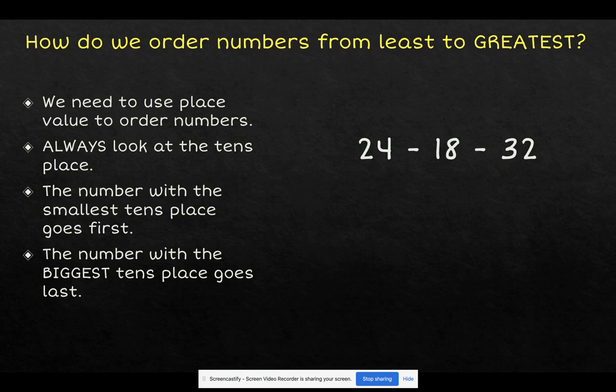Here we have the numbers 24, 18, and 32. In 24, the 2 is in the tens place. In 18, the 1 is in the tens place. And in 32, the 3 is in the tens place.